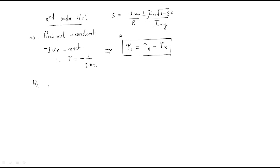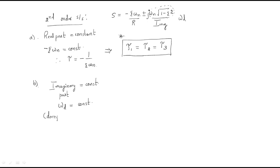In the second case, if the imaginary part is constant for the given poles, then ωd = ωn√(1-ζ²) is constant. This ωd is the damped frequency — the frequency at which oscillations occur. So when the imaginary part is the same across systems, the damped frequency ωd is constant.